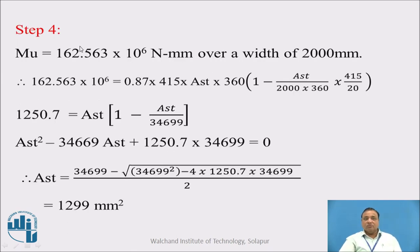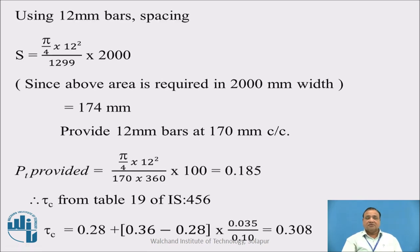Now we use equation G.1.1B from IS456-2000 to find the area of steel. Equating MU to AST × fy × D × (1 minus AST × fy / (B × D × FCK)), we find the area of steel is 1299 mm². Using 12 mm bars, the spacing works out to be 174 mm center to center. So provide 12 mm bars at 170 mm center to center — that is the main steel.